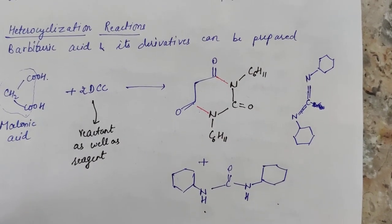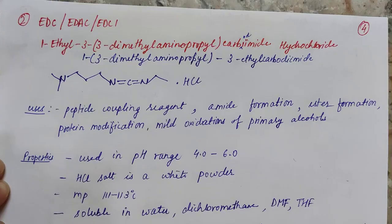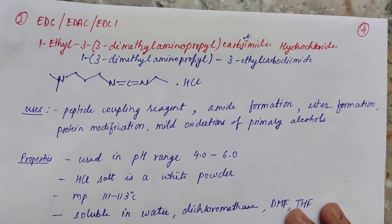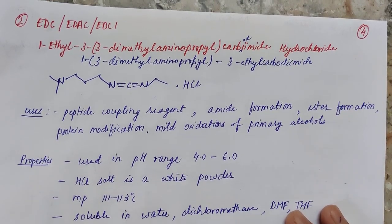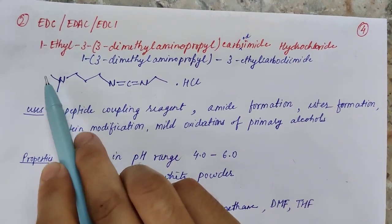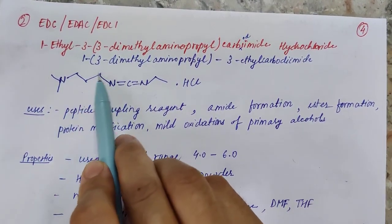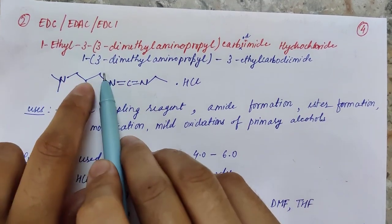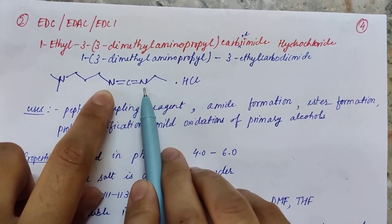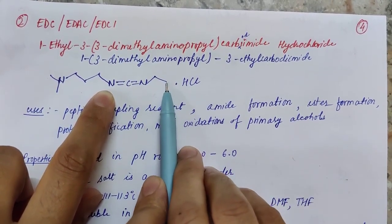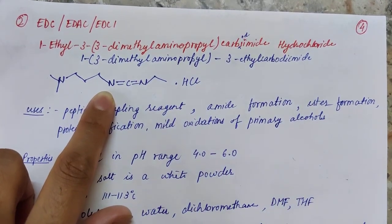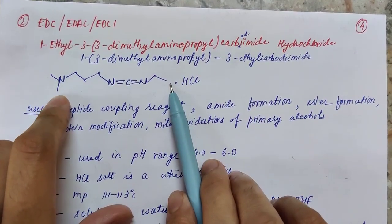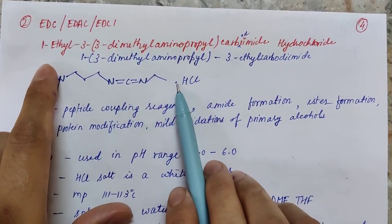The second amide coupling reagent is EDCI, also known by names such as EDAC or EDC. This is its structure: it has a nitrogen with two methyl groups, a three-carbon propyl group in between two nitrogens — similar to DCC — and an ethyl group on the other side. If we compare this with DCC, the only difference is the moiety attached on both sides.